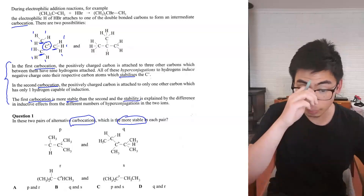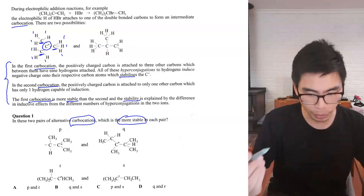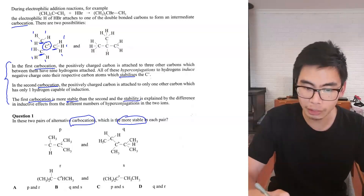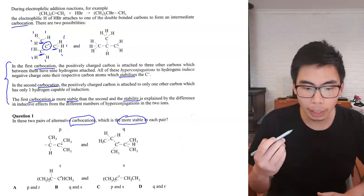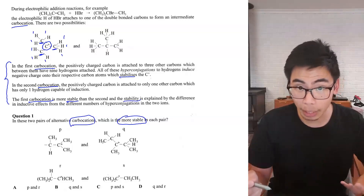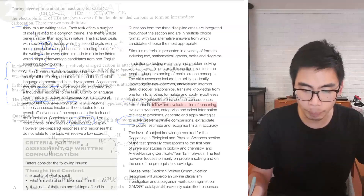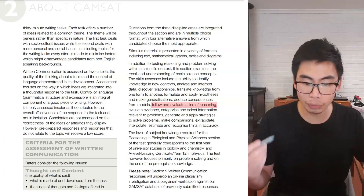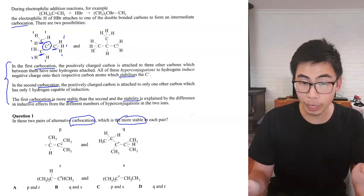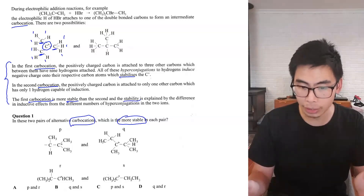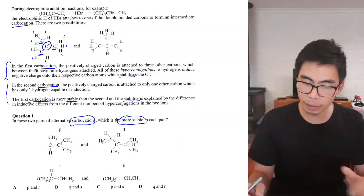All of these hyperconjugations to hydrogens induce negative charge on their respective carbon atoms, which stabilizes the C+. So those specific hydrogen-to-carbon bonds lead to a negative charge occurring on those carbons, and those negative charges stabilize the C+. The logic is: hyperconjugations induce negative charge on neighboring carbons, and those negative charges stabilize the positively charged carbon.